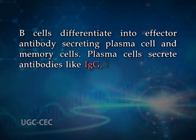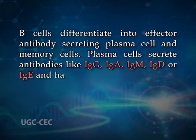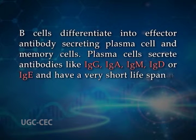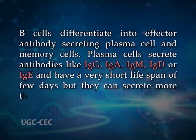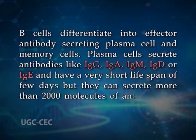Plasma cells secrete antibodies like IgG, IgA, IgM, IgD, or IgE and have a very short lifespan of a few days, but they can secrete more than 20,000 molecules of antibody per second. Memory B cells express the same membrane-bound antibody as naive B cells and remain in circulation for a long time, thus having a long lifespan. B cells also act as antigen-presenting cells.